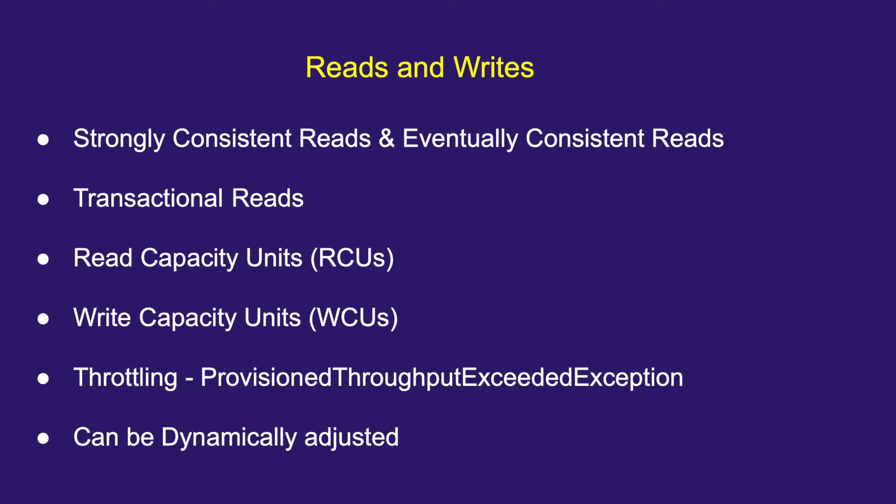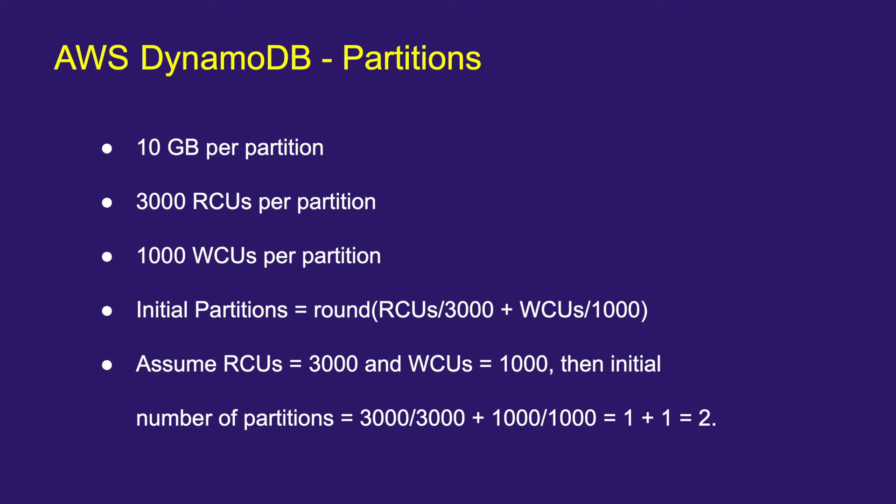If you cross the RCU/WCU limits for a particular partition, DynamoDB's adaptive capacity feature — introduced in 2019 — will kick in to continue serving your read and write requests. Before that feature was introduced, exceeding per-partition limits would cause problems. It's important to understand what partitions are.